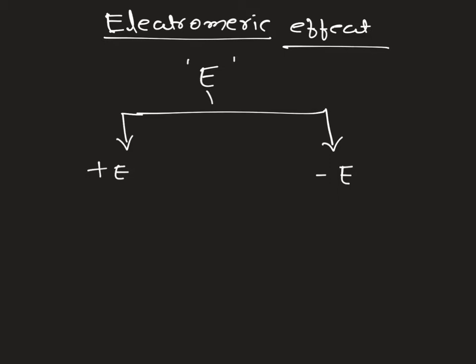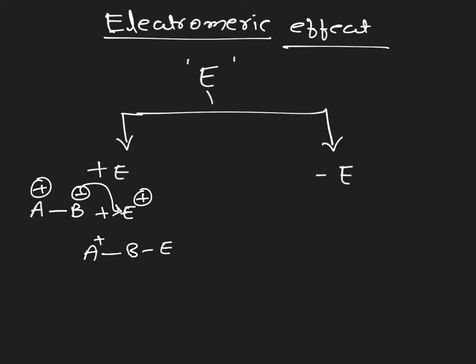For example, taking positive electromeric effect with A double bond B: in presence of a polar reagent, let us assume the pi bonded electrons are migrated in this fashion, giving B minus and A positive. If we bring an electrophile as the polar reagent, the B negative donates to the electrophile, forming an addition product. The pi bonding electrons displace toward the polar reagent, and this effect is called the +E effect — pi electrons displace toward the attacking reagent.